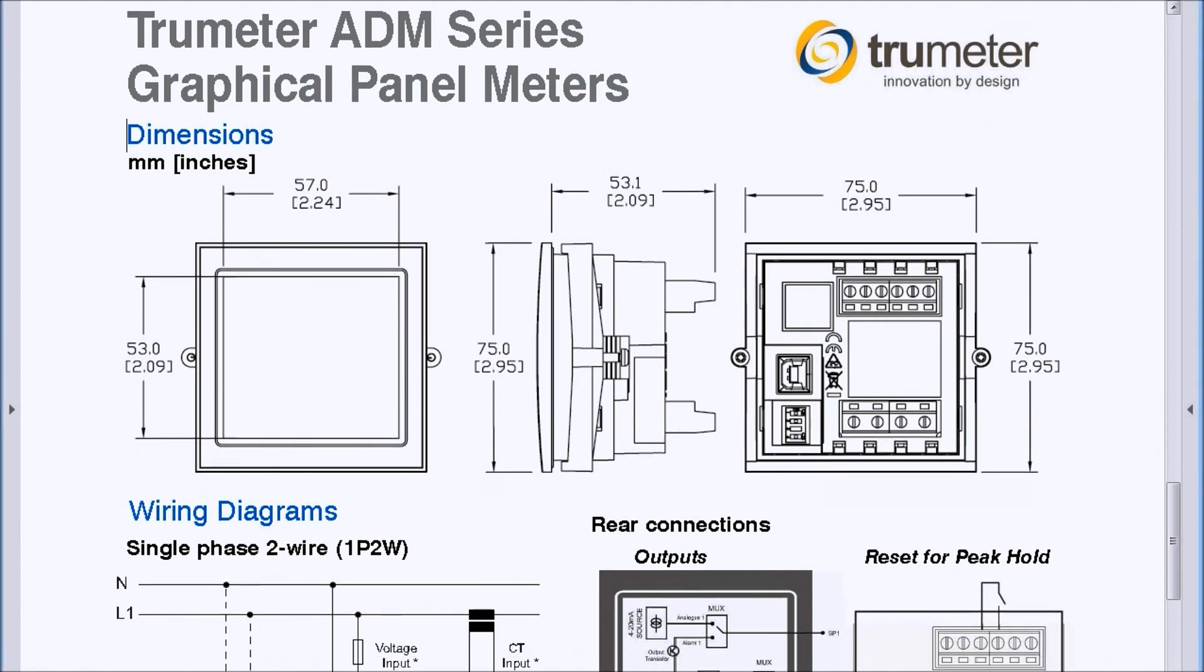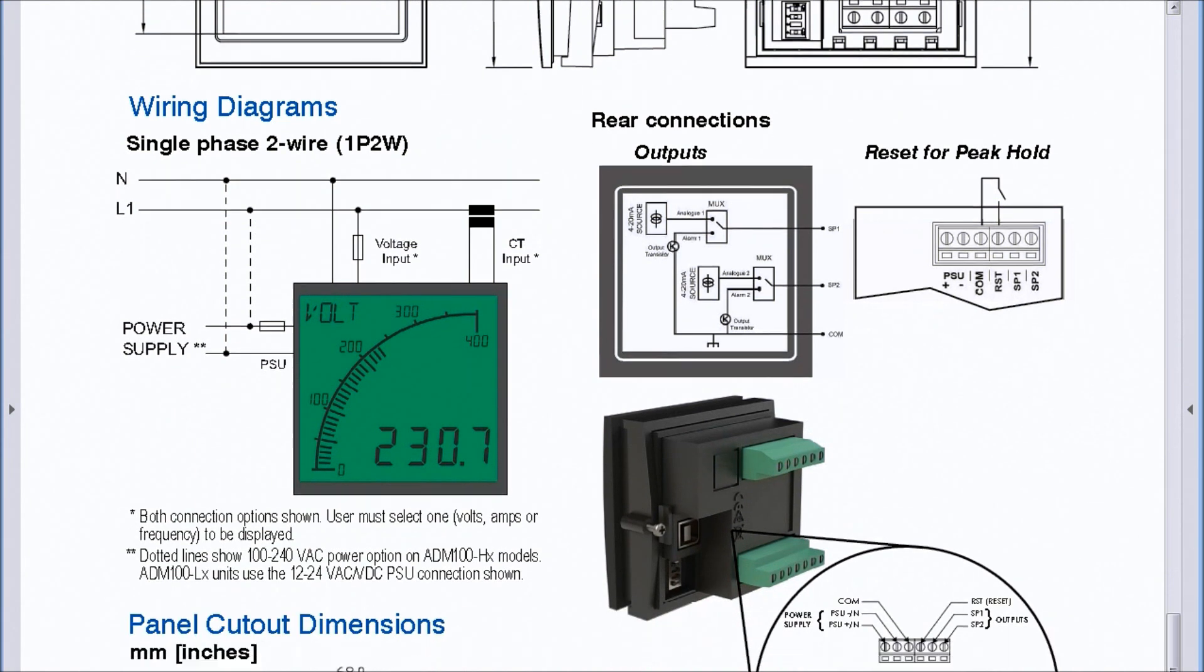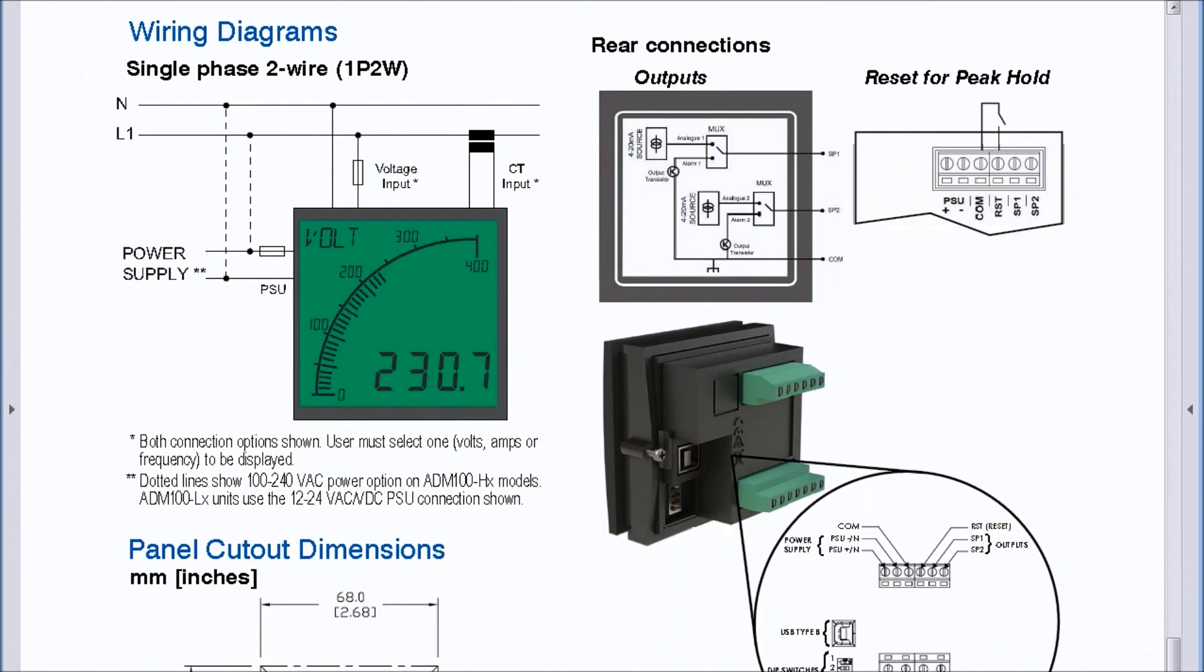If I scroll down we'll see the wiring diagrams. Basically, we have four different models - one being the DC version, one being the AC version, and then we have two different backgrounds, either white on black or black on white display.